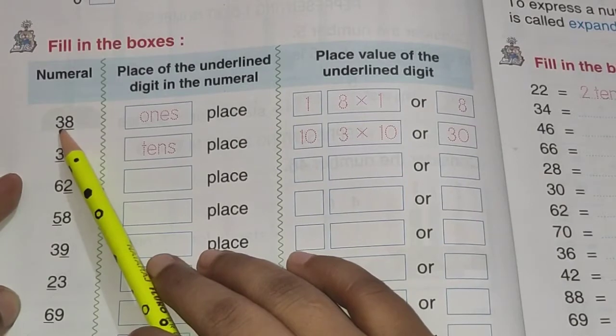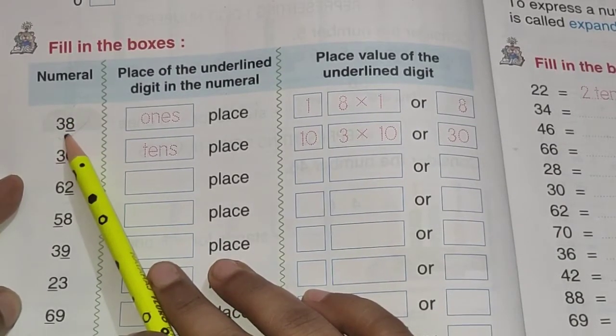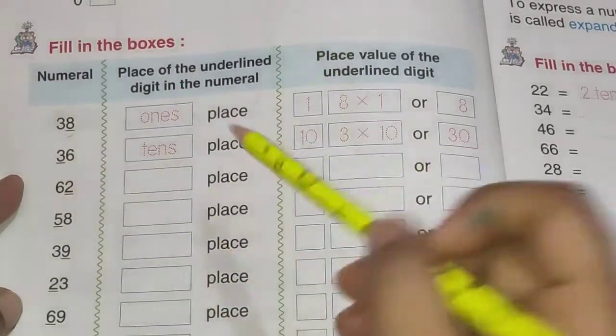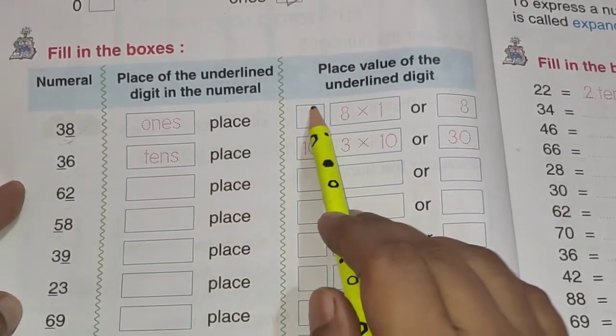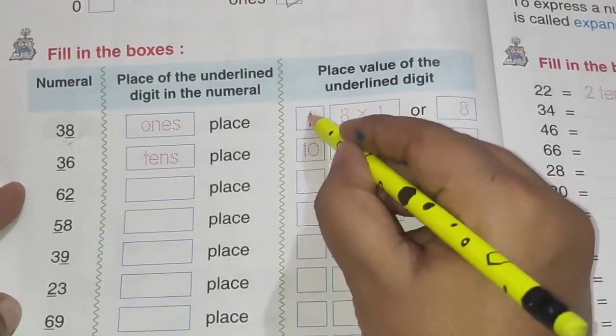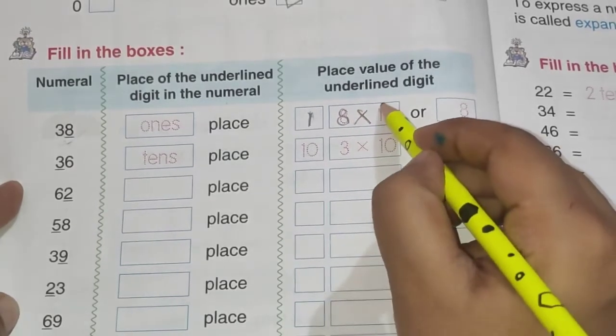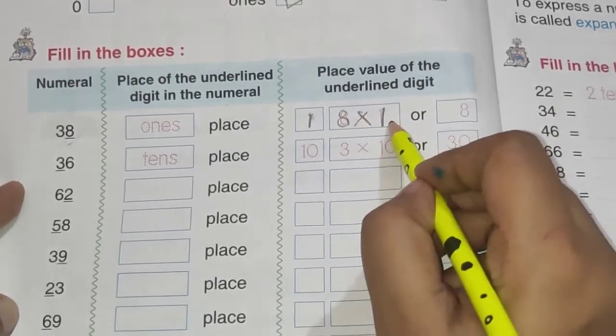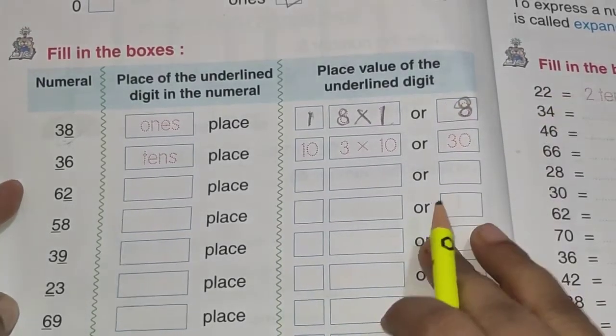So in the first number, here we have 38. 38 mein 8 underlined hai. Aur 8 kis place pe hai? Ones place pe hai. So it is ones place. So yaha par hum likhenge one. One likhenge. And 8 mein hum log, kyunki kya? Face value into place value. 8 into 1 and it is 8.